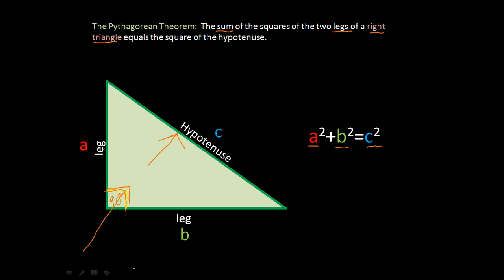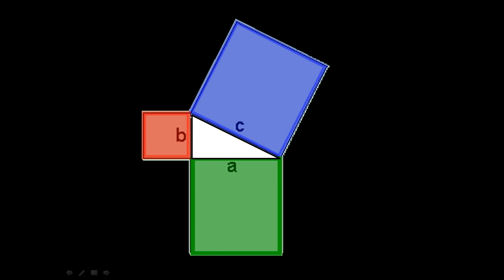Another way to think about this is to make a square on each side of the triangle. What the Pythagorean theorem is saying is that if we make a square out of each leg and a square out of the hypotenuse, the areas of the two smaller squares actually add up to equal the area of the large square on the hypotenuse. There's a little demonstration of this on Wolfram, so let's go check that out.